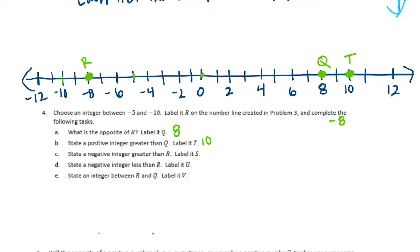State a negative integer greater than r and label it s. We're looking for a negative integer greater than r, or greater than negative 8. This is where it can get confusing, because greater than negative 8 means moving towards 0. Negative 4 is greater than negative 8 because it's closer to 0 — you'd rather owe your parents $4 than owe them $8. So negative 4 is greater than negative 8.